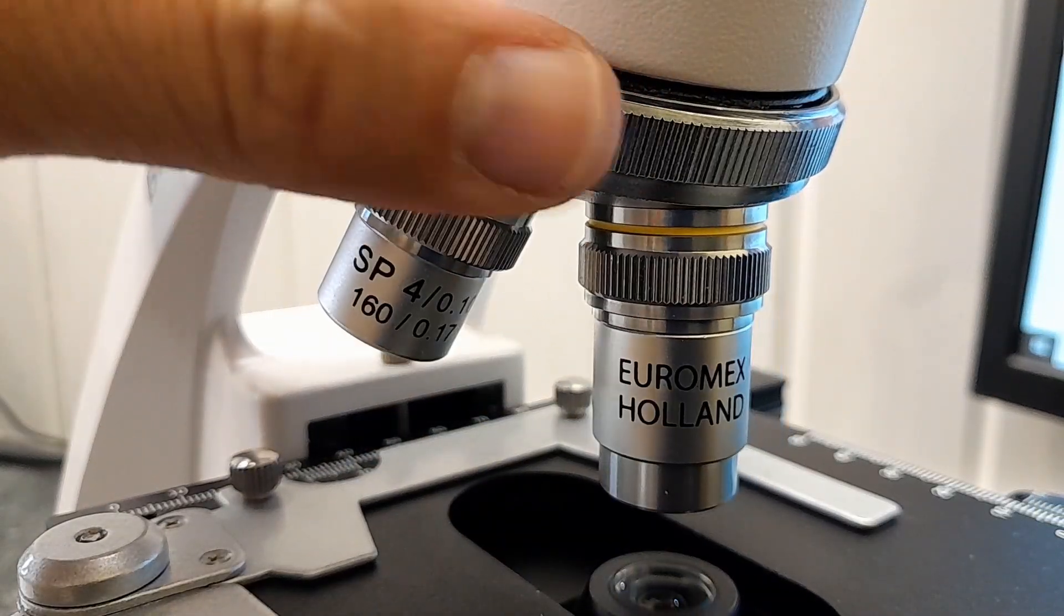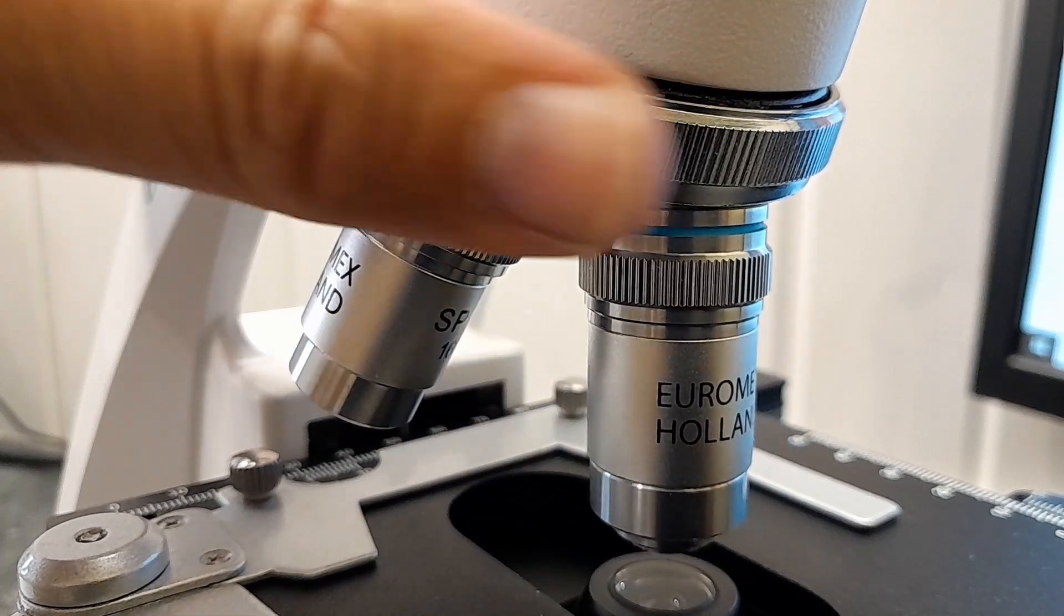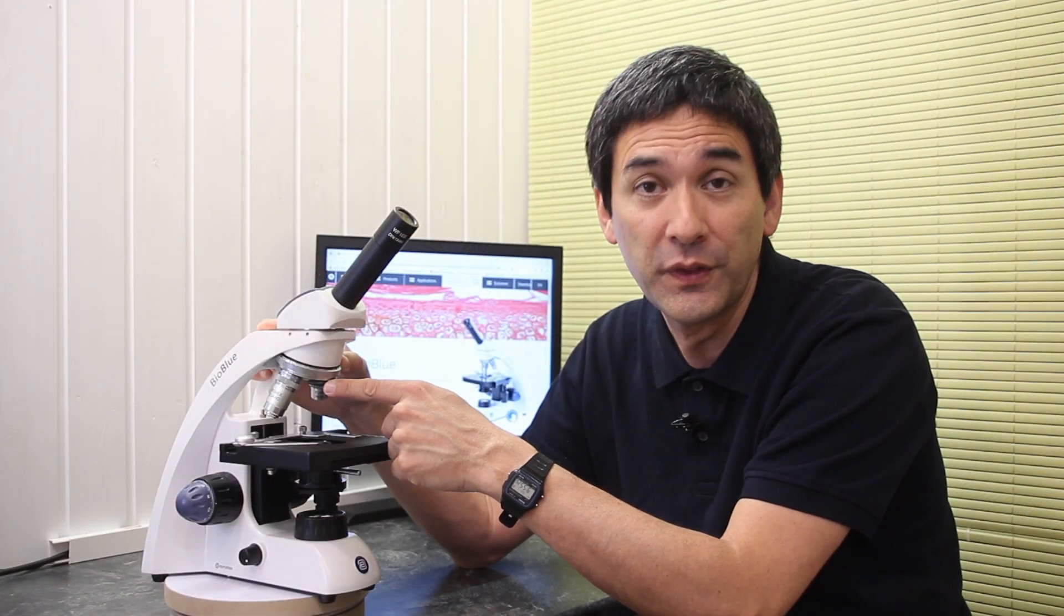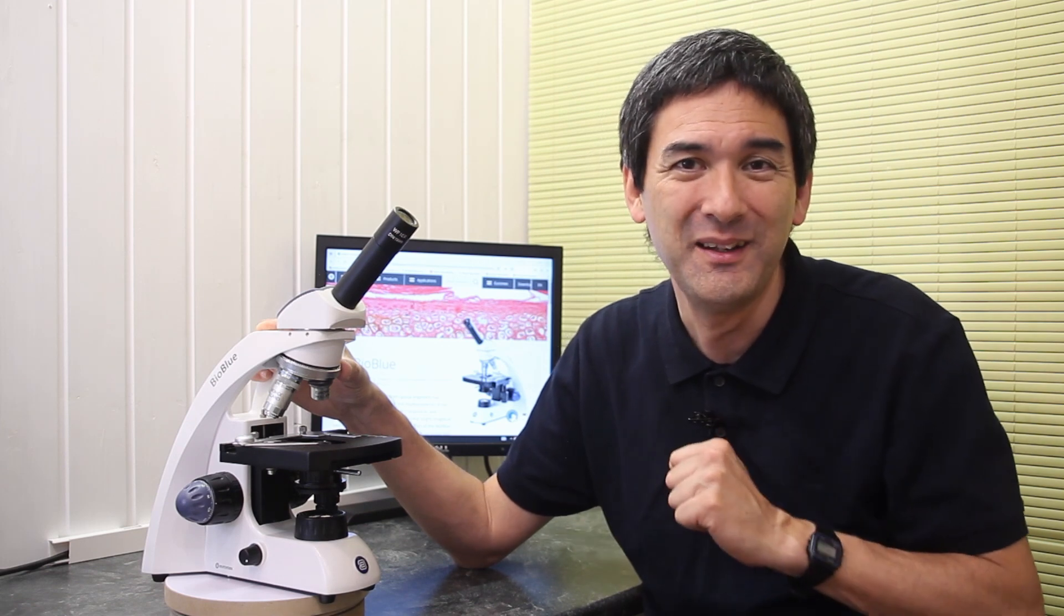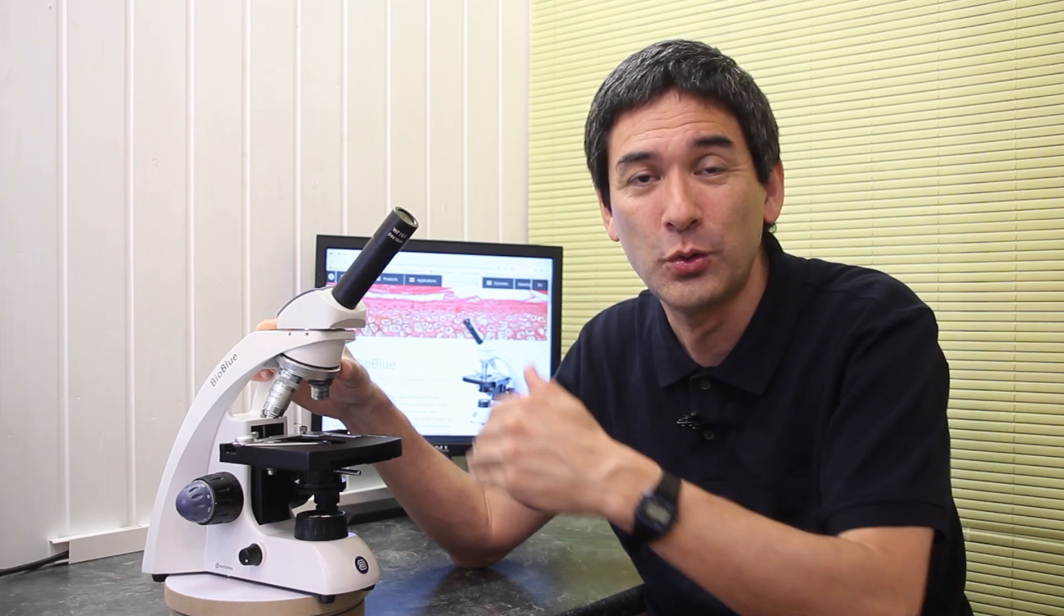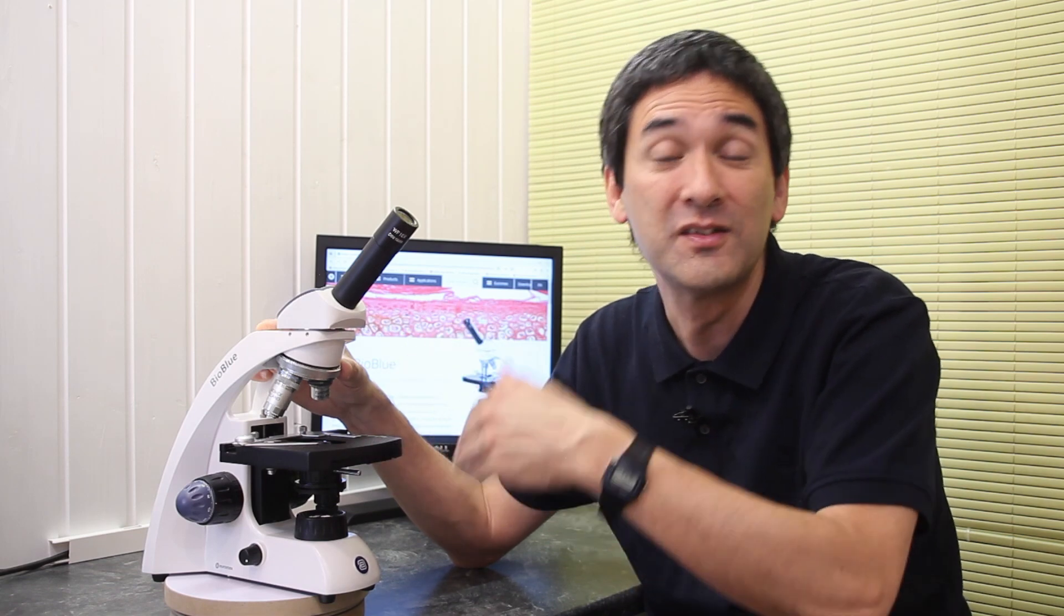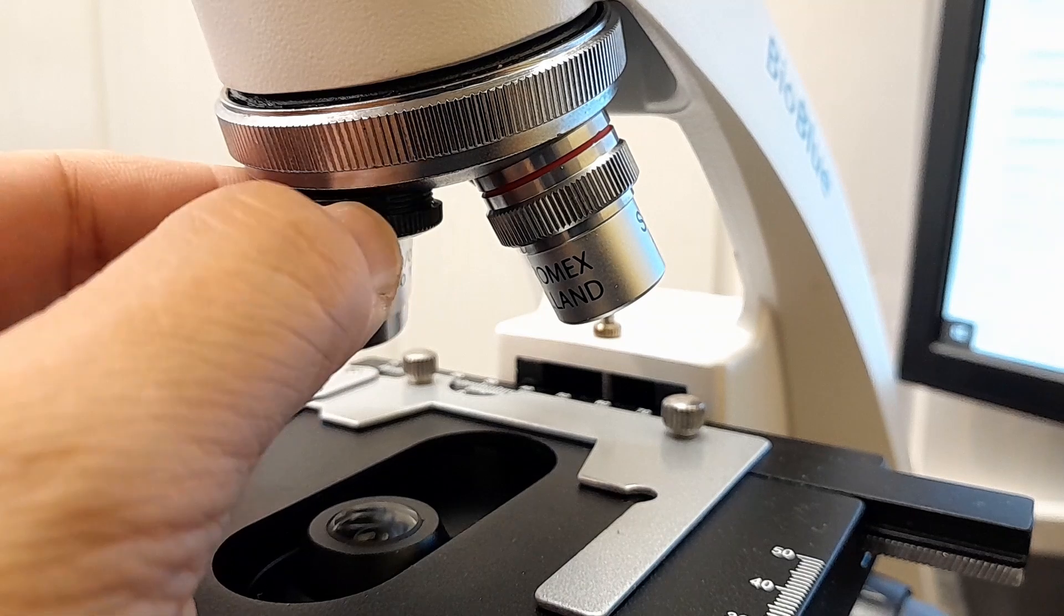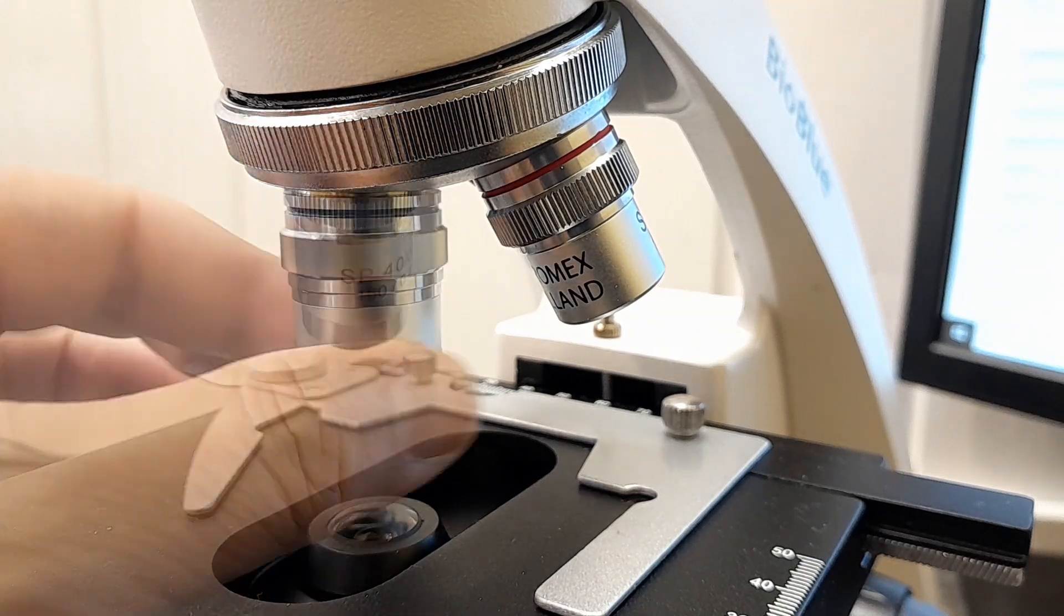The microscope comes with three objectives installed: a 4x, a 10x and a 40x objective but it is possible to install also a fourth objective. You can install an oil immersion objective, something I generally do not recommend in a school because students might contaminate the non-oil objectives with immersion oil, happens all the time. Alternatively you can insert a 60x or a 20x objective. The three objectives are enough for everyday microscopy use in a school.